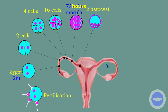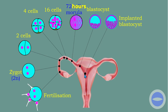The blastocyst also undergoes mitosis and then implants itself at the uterus. When it implants at the endometrium, we now call it an embryo — it is no longer a blastocyst. So the embryo is when a blastocyst has implanted itself at the uterus. This is the process of formation of a blastocyst, undergoing mitosis many times until we have an implanted blastocyst.